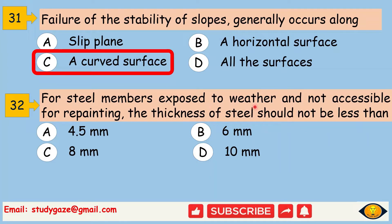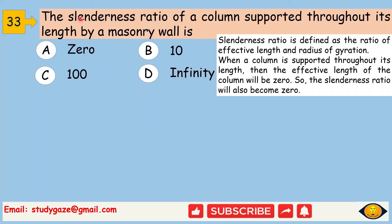For steel members exposed to weather and not accessible for repainting, the thickness of steel should not be less than 8 mm. Next, the slenderness ratio of a column supported throughout its length — since effective length is 0, the slenderness ratio is 0.